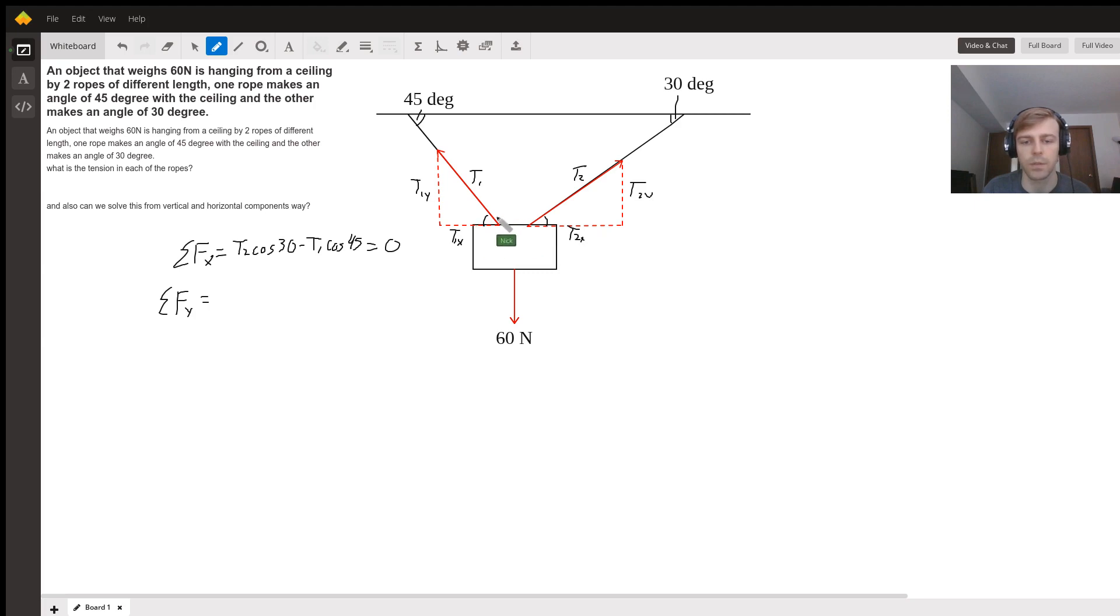Now just like cosine worked for the x components, sine is going to work for the y component. So sine of the angle, 45 in this case, is going to be T1y over T1. You rearrange it and you'll see the relationship that we want. Both tensions are going upward, so the two tensions are going to be positive. So we have T1...